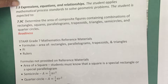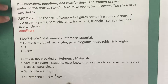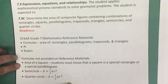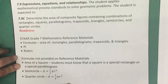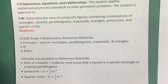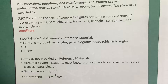There are some formulas that are not provided on the reference materials that are mentioned in this standard. First of all, the area of a square is not on the reference materials — students must know that a square is a special rectangle or a special parallelogram. The formula for a semicircle is not provided, nor the formula for a quarter circle. Students must know that for a semicircle you take the area of a circle and multiply by one-half, and for a quarter circle you take the area of a circle and multiply by one-fourth.